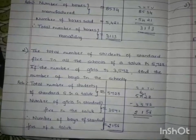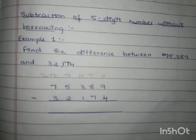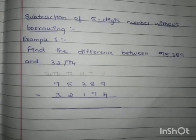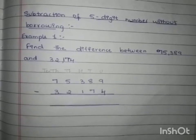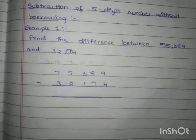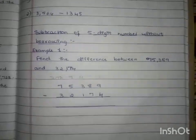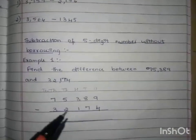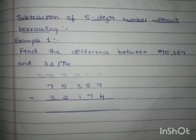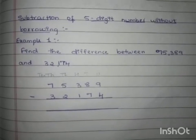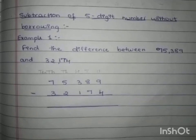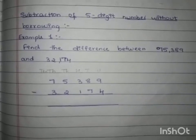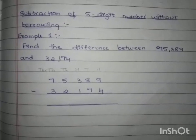Assuming we were able to recall how to subtract, we will move on to the next topic: subtraction of 5-digit numbers without borrowing. Till now we have studied how to subtract 4-digit numbers; now we will be starting how to subtract 5-digit numbers. Example 1 is: find the difference between 75,389 and 32,174. If the question asks us to find the difference or the remaining number, we have to subtract the given two numbers.